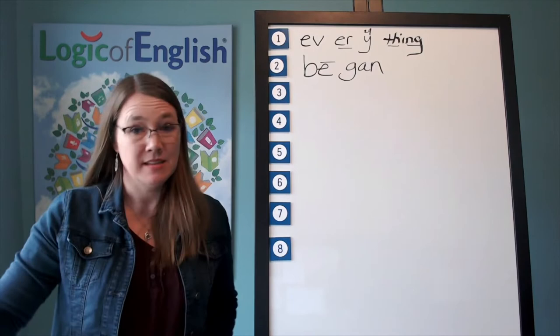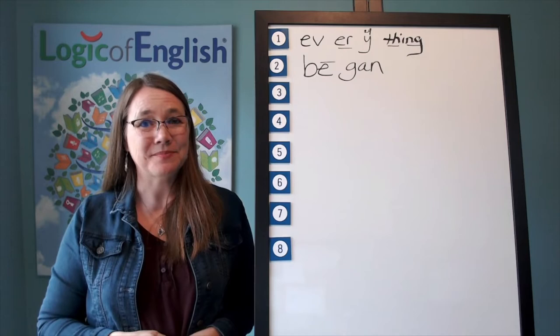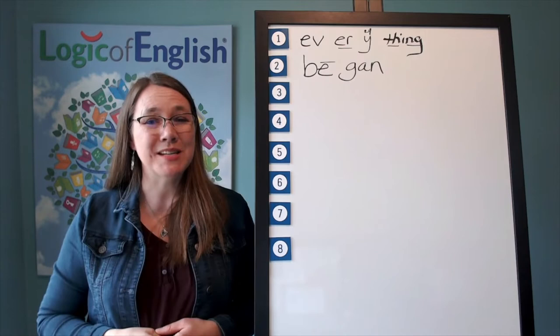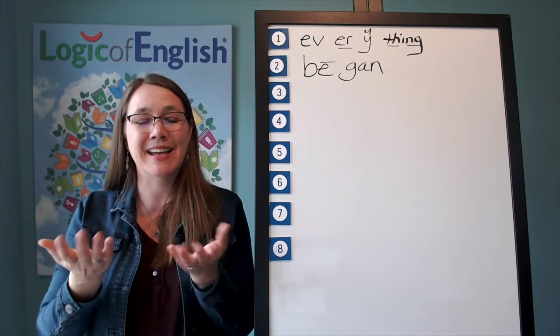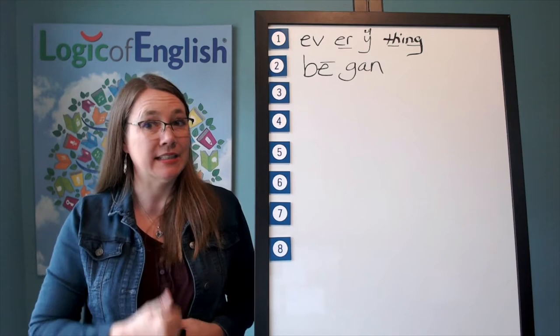The next word is begin. What time will we begin? Go ahead and say begin. How many syllables? Two. We will say to spell be-gin. What will we say to spell? Be-gin. Let's sound it out. The first syllable is be, B-E.